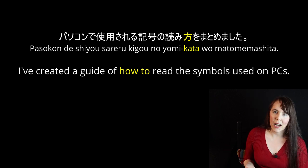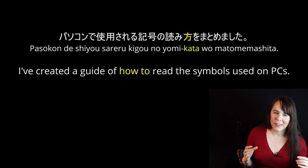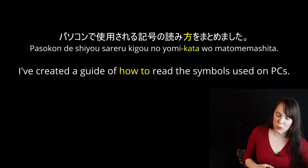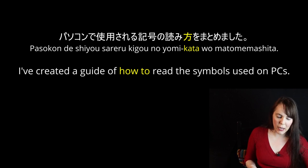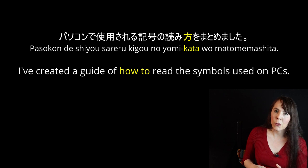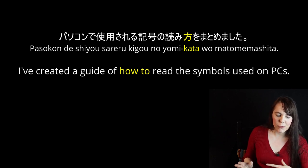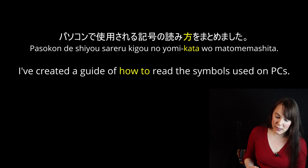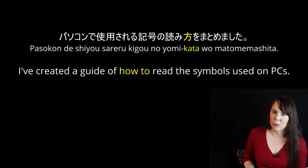'パソコンで使用される記号の読み方をまとめました.' How to read, basically. Pasokon de — with or by means of a computer. Shiyou sareru — to be used. So: symbols used on computers. Kigou no yomikata — how to read the symbols. So this is how to read the symbols that are used on PCs. Wo matomemashita — I've gathered or created a guide. So: I've gathered a list of how to read the symbols used on PCs.